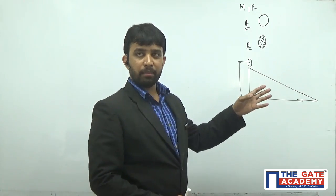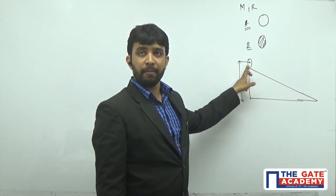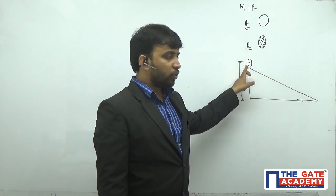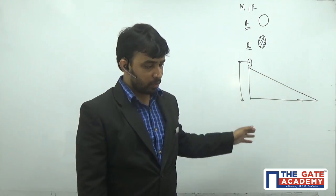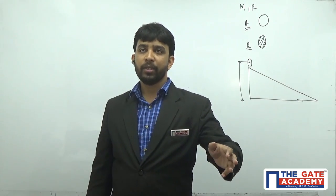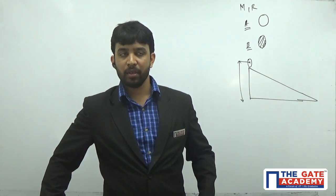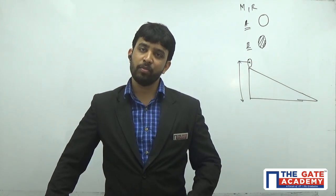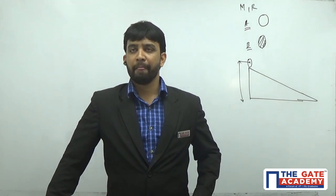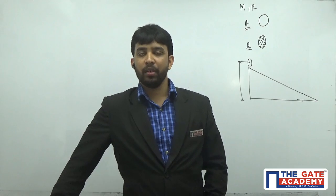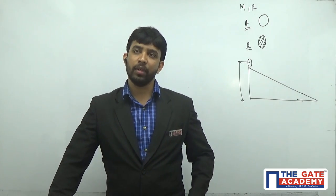Since both disks are of the same mass and were at the same height initially, both disks had the same potential energy initially. As they rolled down, their respective potential energies converted into kinetic energies. Since their initial potential energies were the same, their final kinetic energies will also be the same. By equating the kinetic energies of disk A and disk B, I can get the ratio of their velocities.